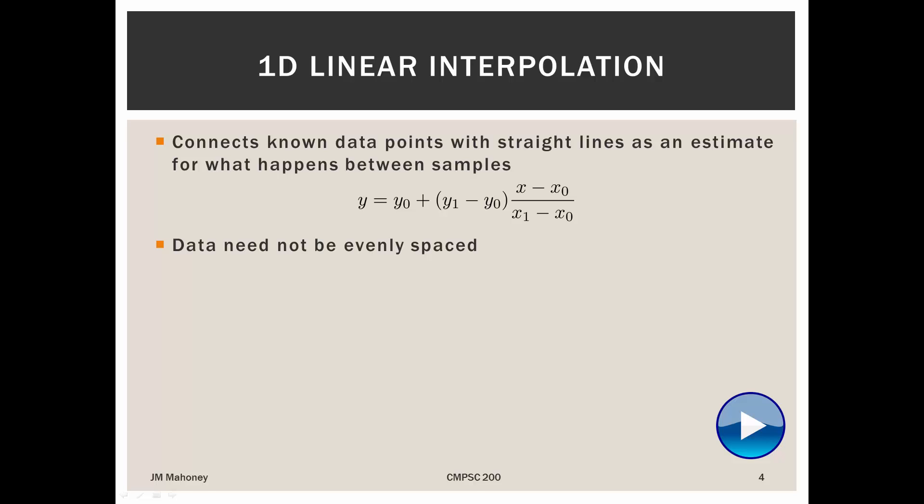Then we're measuring our temperature at those times. So we would know the temperature just to the right, that's y1, and the temperature value just to the left, that's the y naught. And then we add to that whole thing y naught, and then that's going to give us our linear estimate as to the value of y.